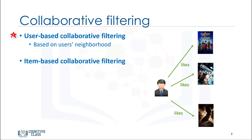User-based collaborative filtering is based on the user's similarity or neighborhood. Item-based collaborative filtering is based on similarity among items.